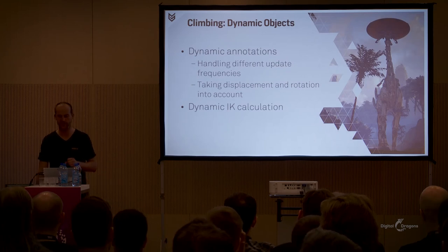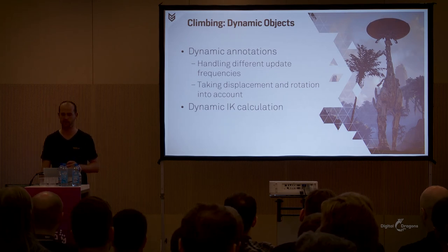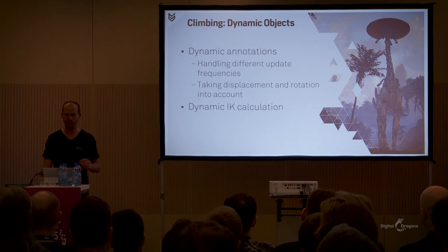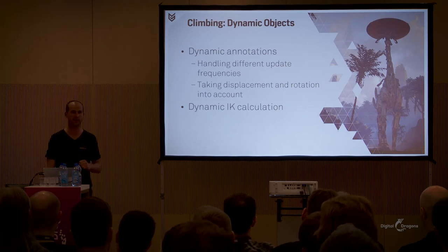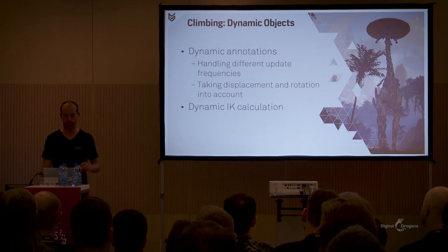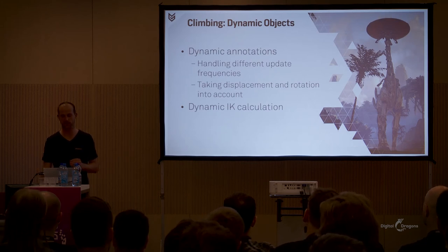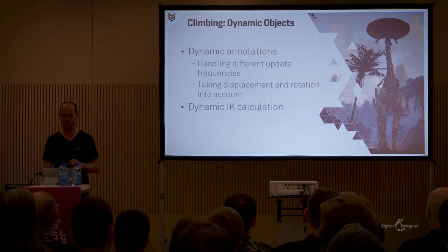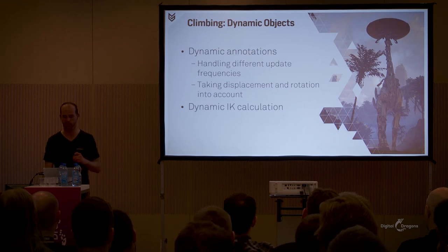One of the bigger challenges was supporting climbing on dynamic objects such as our tall neck. Not all assets have the same update frequency — Aloy is updated at a higher frequency than our tall neck. So when jumping towards or climbing on a tall neck, we have to compensate the motion of the tall neck's annotations for this difference in update frequency, and also correctly apply the motion of the object we're attached to onto Aloy's body. To ensure feet and hands are placed correctly on the climb asset, the collision probing also needs to be in sync with the desired update frequency — since tall necks are updated at a much lower frequency, Aloy's probing should also be performed at that same lower frequency.